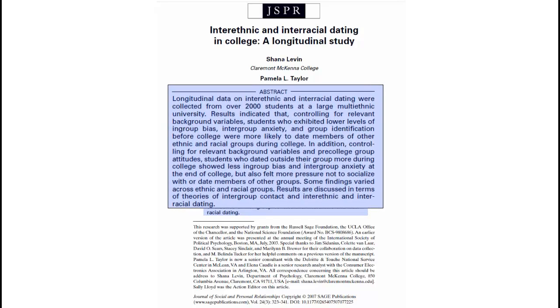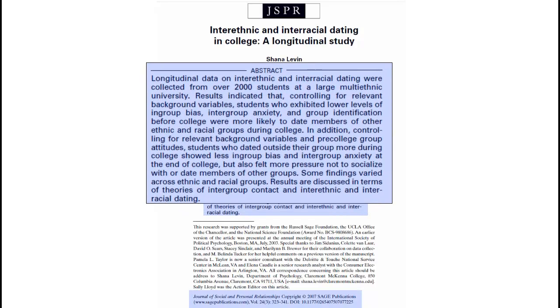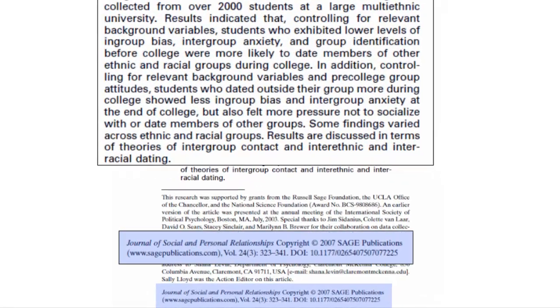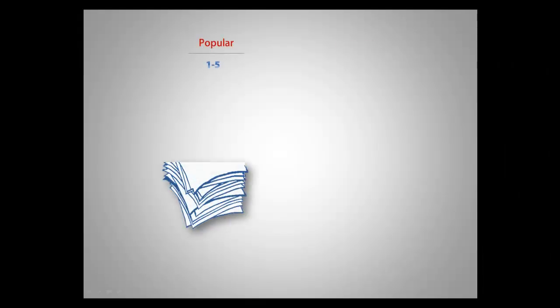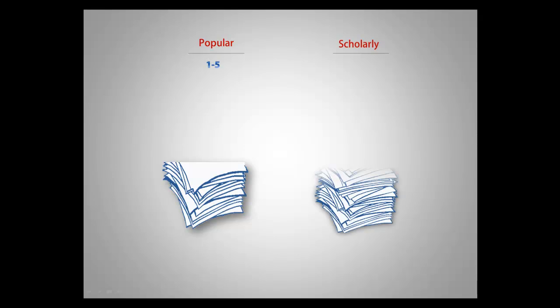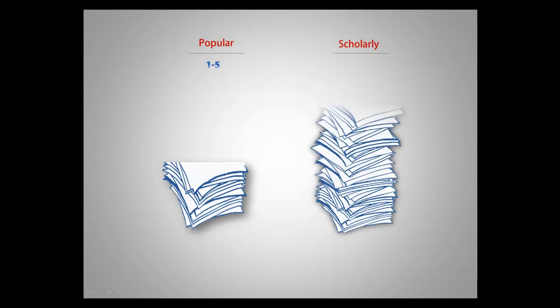The article should contain an abstract that summarizes the main points of the article. The length of the article is useful to look at as well. Popular articles are usually brief, one to five pages, whereas scholarly articles are usually much longer.